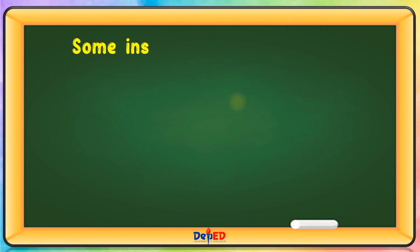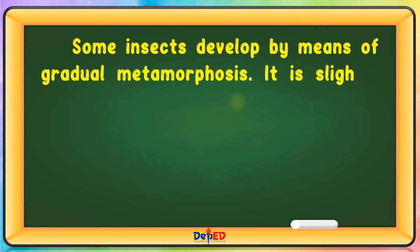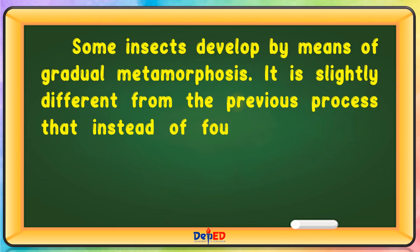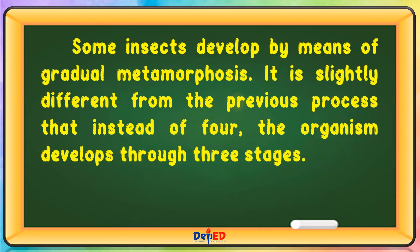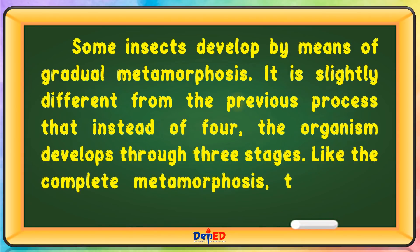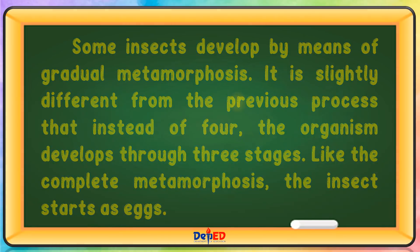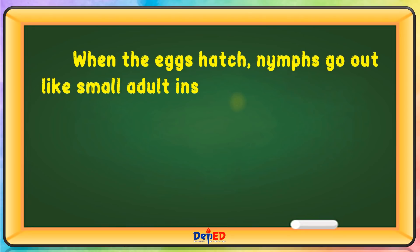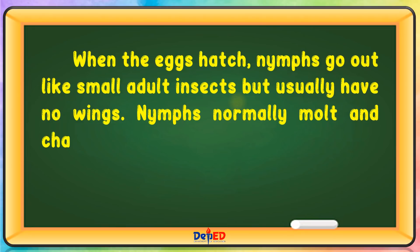Some insects develop by means of gradual metamorphosis. It is slightly different from the previous process in that instead of four stages, the organism develops through three stages. Like complete metamorphosis, the insect starts as eggs. When the egg hatches, nymphs come out as small adult insects but usually have no wings.